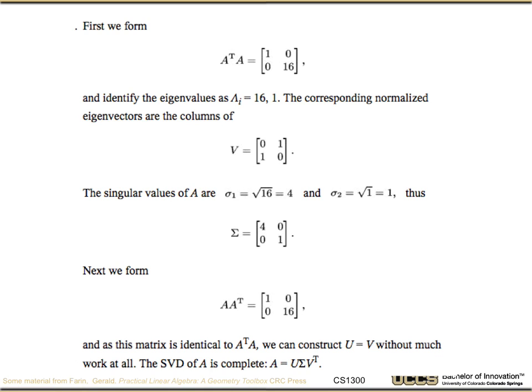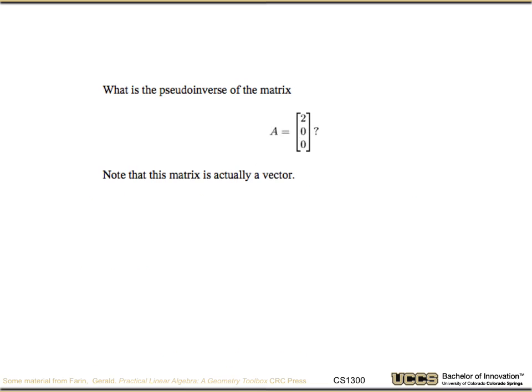Okay, so now let's do a slightly more complicated example. Let's ask, what is the pseudo-inverse of a matrix A? Pseudo-inverse, remember, is something that when we multiply it by, it gives us something as close as we can in the least square sense to the inverse. I'm going to note that this matrix is actually a vector, so it's a very special case. And you can use SVD to solve this problem. So work through that, pause the video, and then come back as soon as you have your solution.